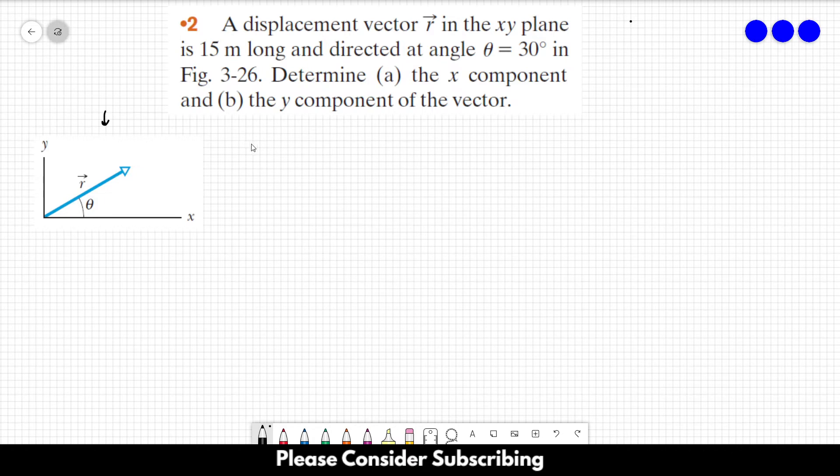So how do we find the x component of a vector? Let's call it Rx. You just have to take the magnitude of the vector and multiply by the cosine of the angle, which in this case is 30 degrees.